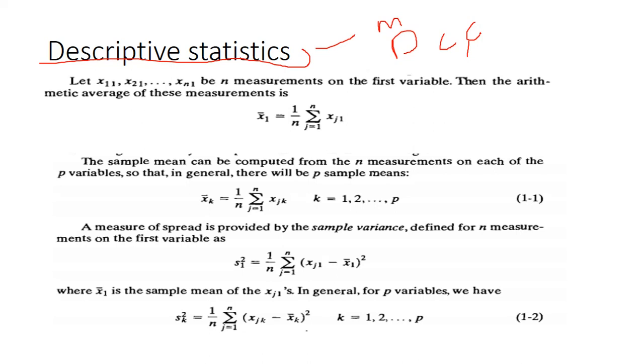In general, in the univariate case we all know formulas. But in multivariate here we are always dealing with vectors and matrices. Let x11, x21, and so on xn1 be n measurements on the first variable. Then arithmetic mean average of the measurements is: x1 bar equals 1 upon n into summation j equals 1 to n xj. This is the formula for finding mean.